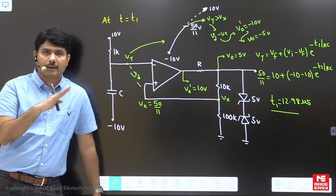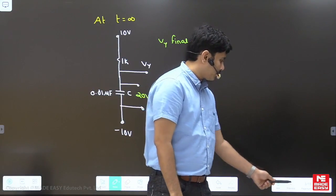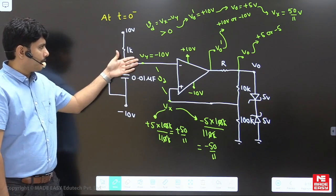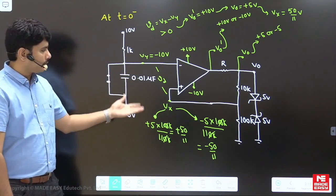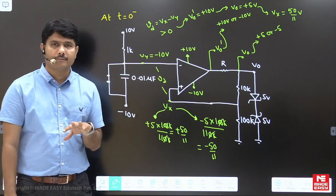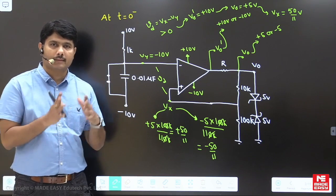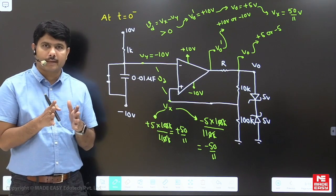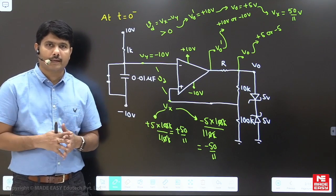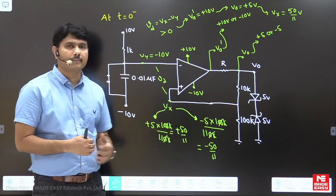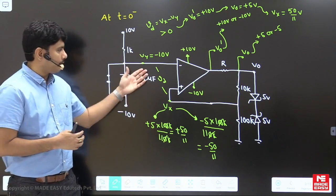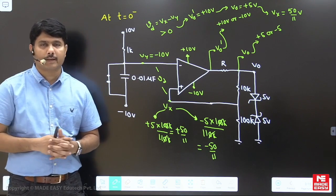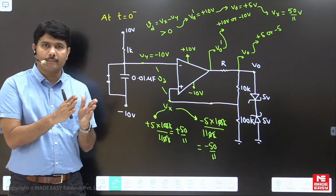The key to this problem is finding the reference V_x correctly. Since V_y = −10V initially and both possible V_x values are greater than −10V, we confirm V_d > 0, op-amp output = +10V, and zener output = +5V. Understanding this first step allows the rest of the solution to follow logically. The state changes from +5V to −5V.